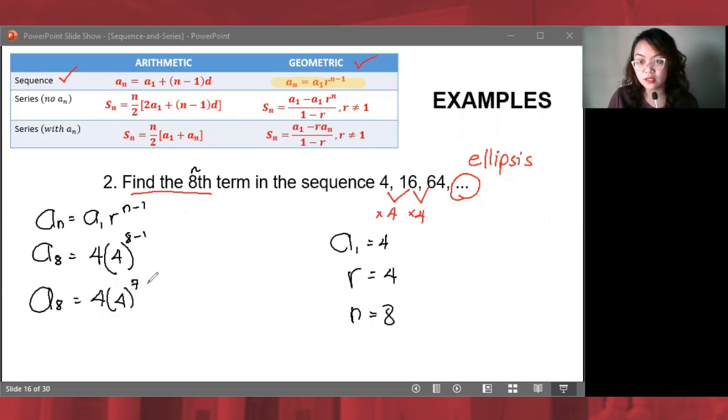At syempre, Besh, hindi ko na kaya itong imanual. Mag-calcule na po tayo. Kaya, ayan, di ba? Napakaganda ng invention ng ating mga sikat na, ano daw, mathematicians and scientists. Thank you for inventing the calculator. And the answer is a sub 8 is equal to 65,536.